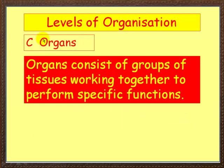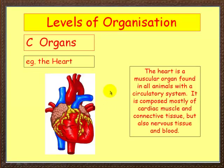The next step up from tissue is the organ. Organs consist of groups of tissues working together to perform specific functions. An example is the heart — a muscular organ found in all animals with a circulatory system. It's composed mostly of cardiac muscle and connective tissue, but also contains lots of nervous tissue and blood.